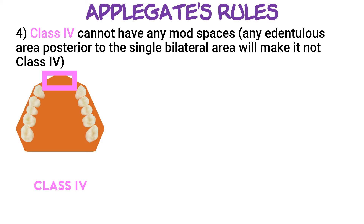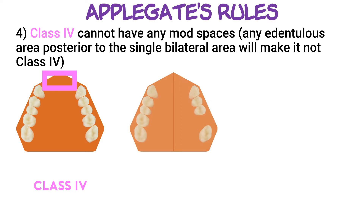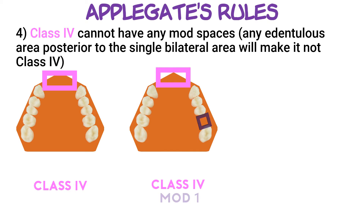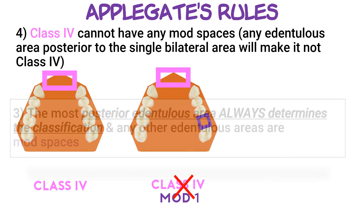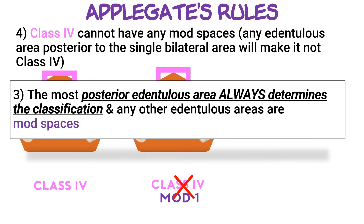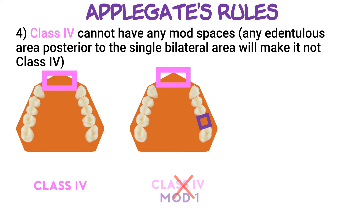The last rule states that Class 4 classifications cannot have any modification spaces. Take this arch for instance, where we have a single edentulous space crossing the midline and another edentulous space at the back. It may be tempting to call this a Class 4 with a modification space of 1. However, referring back to Rule 3, the classification is always dictated by the most posterior edentulous area. Which means this arch should instead be called Class 3 with a modification space of 1.